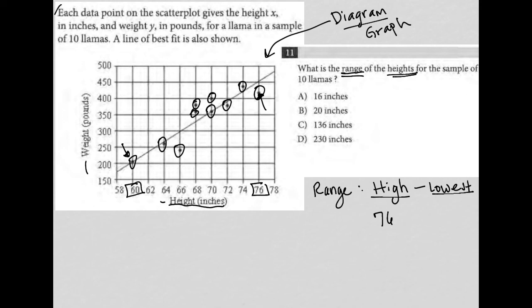So 76 minus 60. The range, therefore, must be the difference between 76 and 60, which is 16. And the answer is choice A.